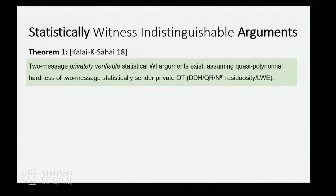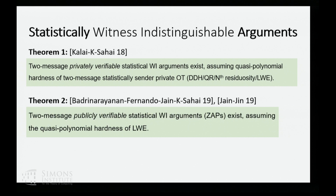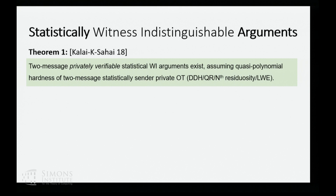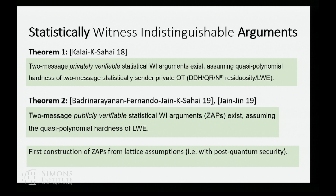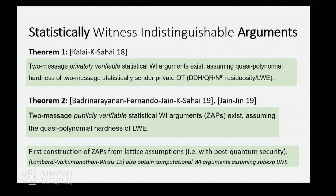More specifically, in the privately verifiable setting, statistical WI arguments exist assuming quasi-polynomial hardness of two-message OT, which can be instantiated from DDH, quadratic residuosity, nth-residuosity, LWE, etc. The other theorem is that two-message publicly verifiable statistical WI arguments exist assuming the quasi-polynomial hardness of the learning with errors assumption. This is also the first construction of ZAPs — publicly verifiable two-message WI — from lattice-based assumptions, and the first post-quantum ZAPs.